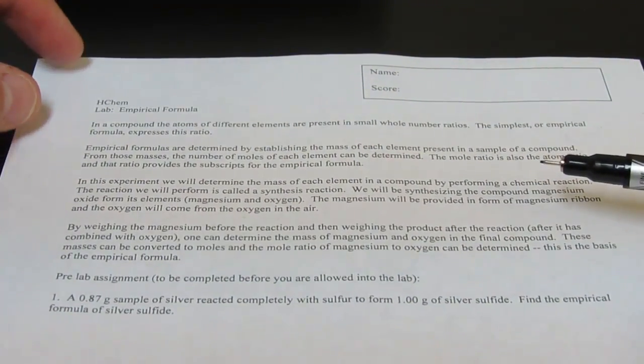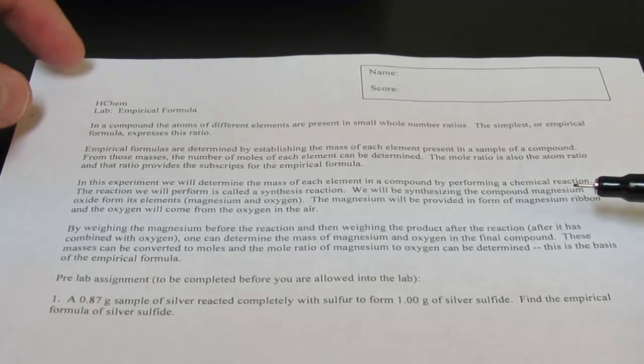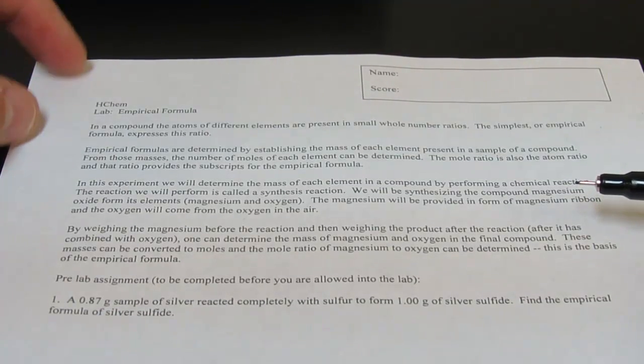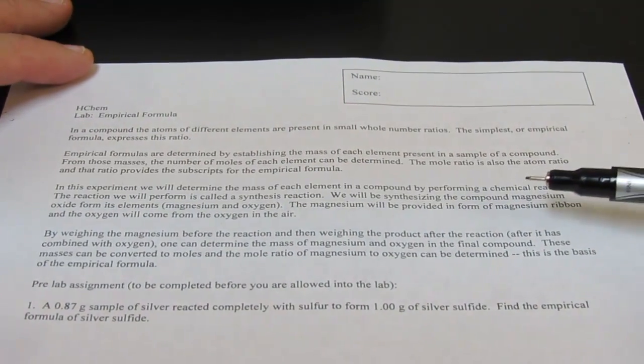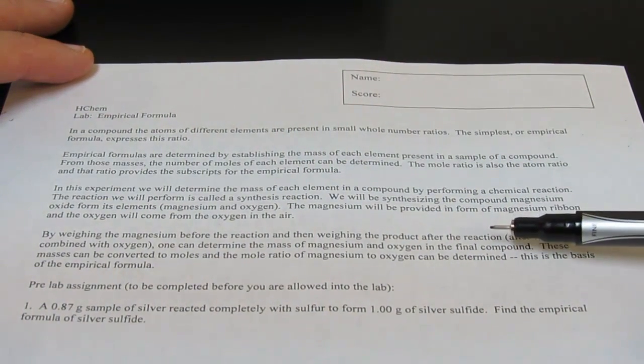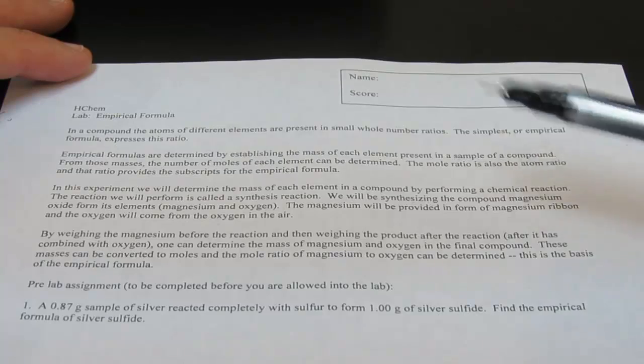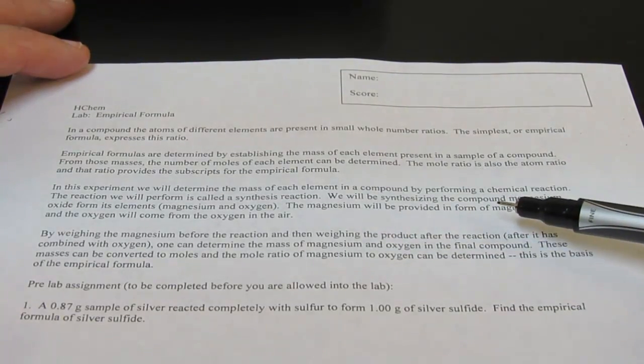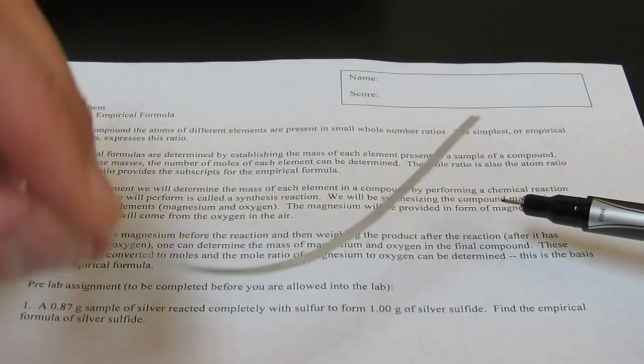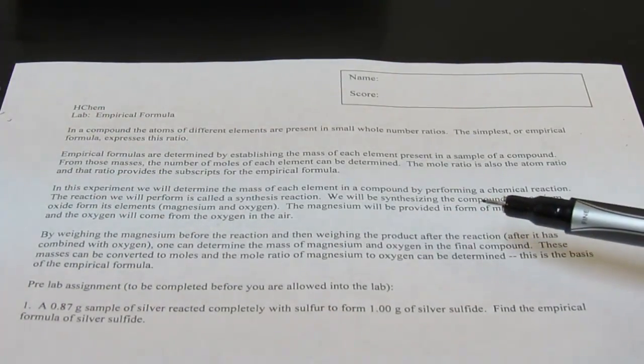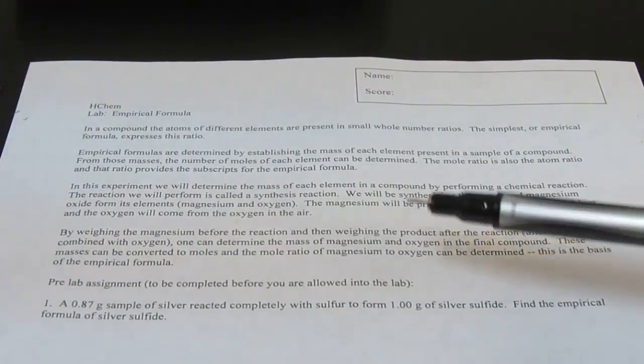In this experiment, we will determine the mass of each element in a compound by performing a chemical reaction. The reaction we perform is called a synthesis reaction. We will be synthesizing the compound magnesium oxide from its elements, of course magnesium and oxygen. The magnesium will be provided in the form of a nice piece of magnesium ribbon, and the oxygen, of course, will come from the air.